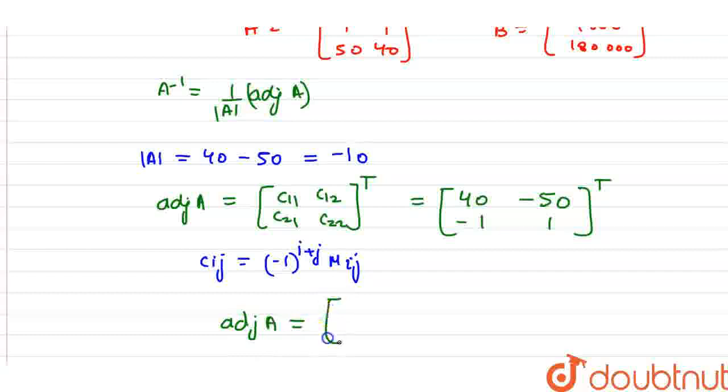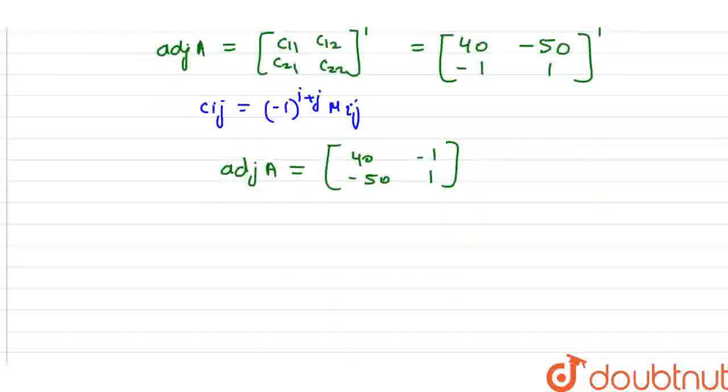So the adjoint of matrix A after transpose is [40, -50; -1, 1].